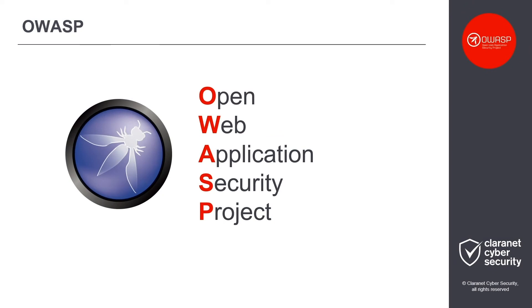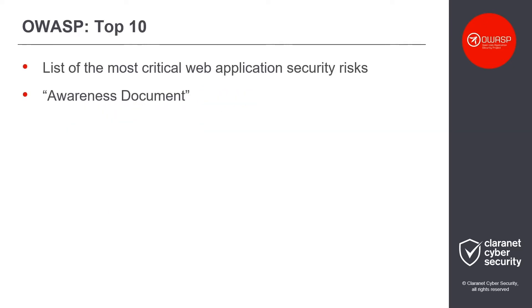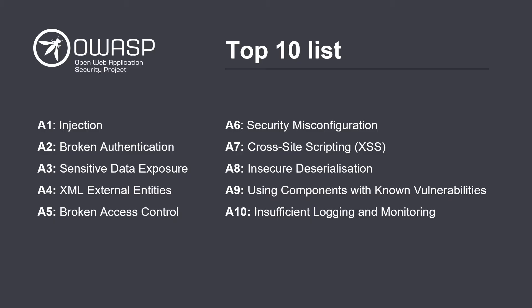OWASP stands for Open Web Application Security Project, which aims to provide cybersecurity suggestions free of charge so that anyone can use the information to improve the security posture of their cyber system. The Top 10 list is what they deem as the most critical web application security risks, and it provides information within an awareness document. The following slide displays the Top 10 list and today we'll be focusing on A6, Security Misconfiguration.